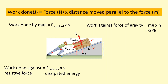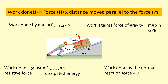Finally, the other force on this box is the normal reaction force. This box actually doesn't move parallel to the normal reaction force — it's moving perpendicular to it. So if we do the force times the distance moved parallel to the normal reaction force, it doesn't move parallel to it, so it would multiply by zero. The work done against the normal reaction force is actually zero.